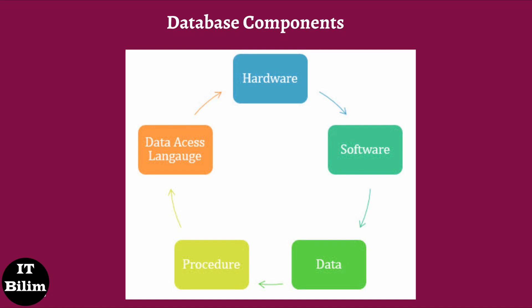Data: Data is a raw and unorganized fact that is required to be processed to make it meaningful. Generally, data comprises facts, observations, perceptions, numbers, characters, symbols, images, etc. Procedure: Procedures are a set of instructions and rules that help you to use the DBMS. It involves designing and running the database using documented methods, which allows you to guide the users who operate and manage it. Database access language: Database access language is used to access data to and from the database, enter new data, update already existing data, or retrieve required data from the DBMS. The user writes specific commands in a database access language and submits these to the database.